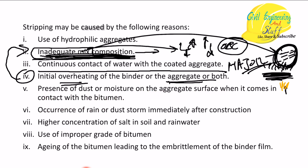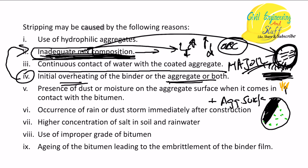Another reason is the presence of dust or moisture on the aggregate surface when it comes into contact with bitumen. If moisture is present in the aggregate and bitumen is coated over it, the bitumen is essentially in contact with water, which will instigate stripping. If dust is on the aggregate surface and binder is coated over the dust particle, proper contact between the aggregate surface and binder will not occur - instead, the binder coats the dust - and there will not be 100% contact between the binder and the aggregate.